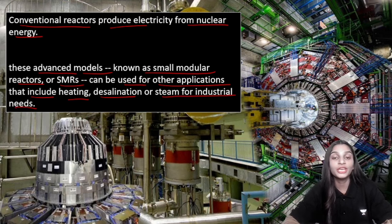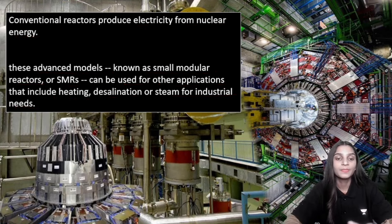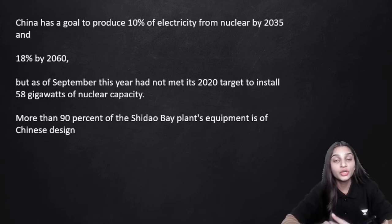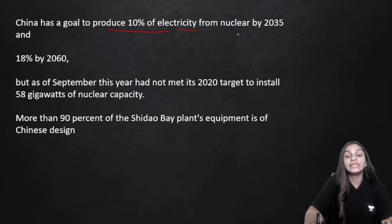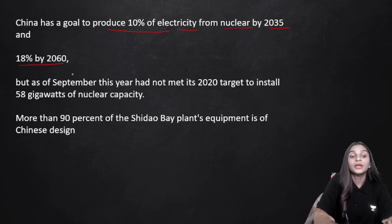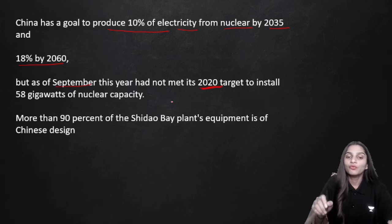China's goal is to produce 10% of its electricity from nuclear energy by 2035. By 2060, they aim to increase that to 18% of electricity from nuclear. However, as of September 2023, they had not yet met their 2020 targets and still have installations to complete.